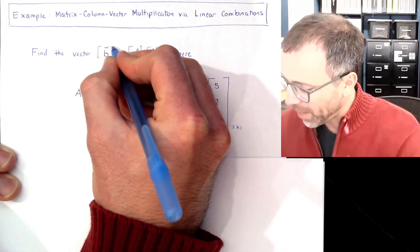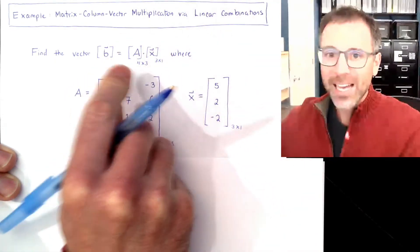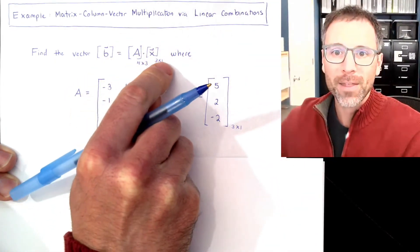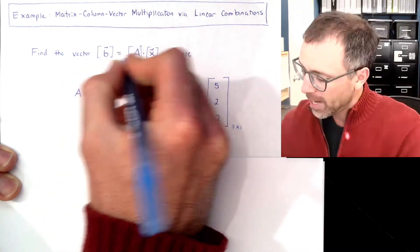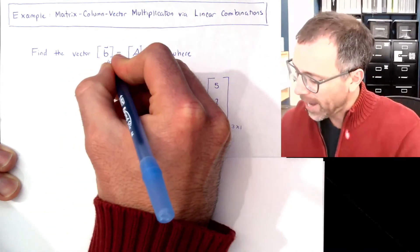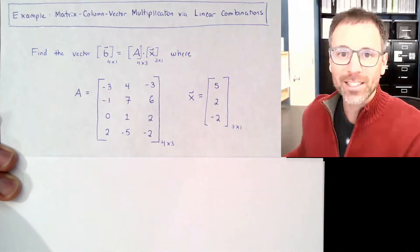And then we say that the size of the product is going to be defined by the size of the outer dimensions. In this case, it's the row dimension of A and the column dimension of x.